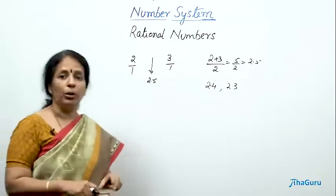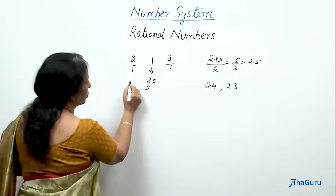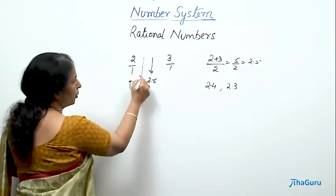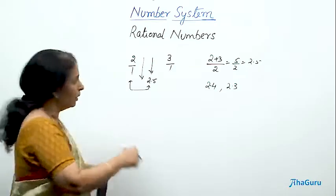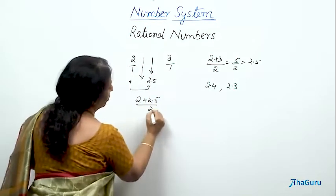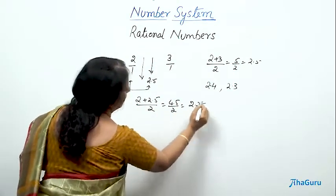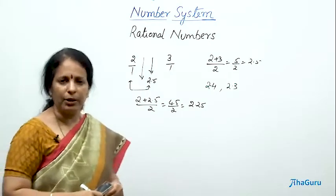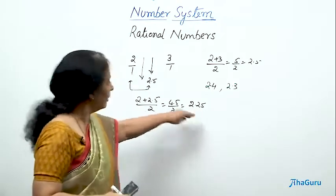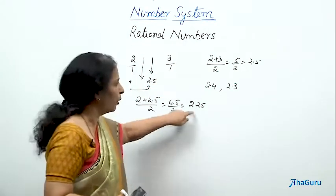Suppose you are asked to find one more rational number. Then what you can do? Find the average between these two, 2 and 2.5. That also is going to lie somewhere here in between the two, in between 2 and 3. So, 2 plus 2.5 by 2, which is 4.5 by 2, which is 2.25. This is also a rational number, a decimal number terminating, which is lying between 2 and 3. So, I have found one more.